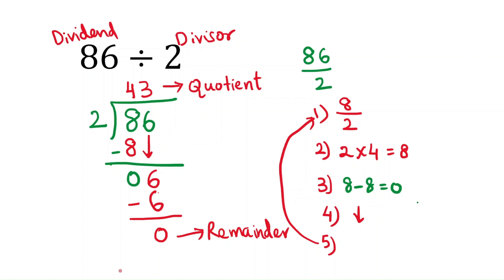If you want to verify your answer is correct or not, then what you have to do: dividend equals to divisor times quotient plus remainder. So that you can verify your answer is correct or not. Let's check another problem.